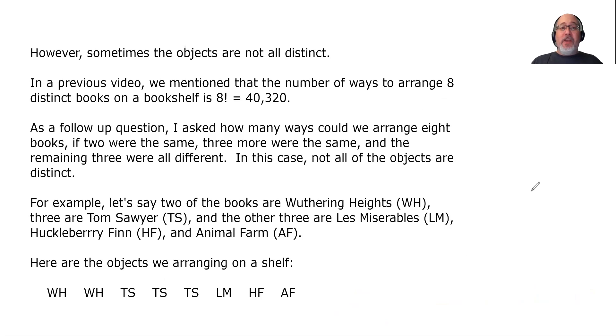But I want to emphasize that this is the formula when you have distinct objects, meaning that all of your objects are different. However, sometimes the objects are not all distinct. In a previous video, we mentioned that the number of ways to arrange 8 distinct books on a bookshelf is 8 factorial, which equals 40,320. In general, a factorial answers the question, how many ways can I arrange these different objects if I arrange all of them?